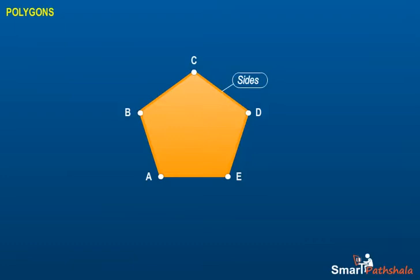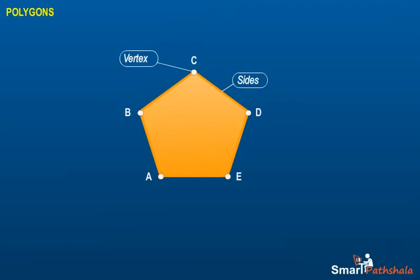The meeting point of a pair of sides is called its vertex. Sides AE and ED meet at E, so E is a vertex of the polygon ABCDE.